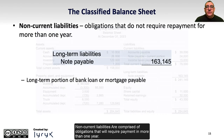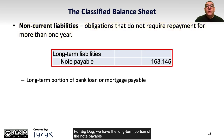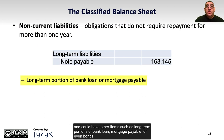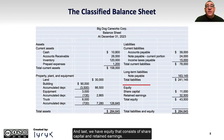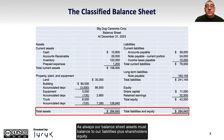Non-current liabilities are comprised of obligations that will require payment in more than one year. For BigDog, we have the long-term portion of the note payable, and could have other items such as long-term portions of bank loan, mortgage payable, or even bonds. And last, we have equity, that consists of share capital and retained earnings. As always, our balance sheet assets must balance to our liabilities plus shareholders' equity.